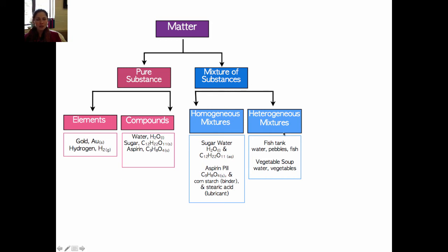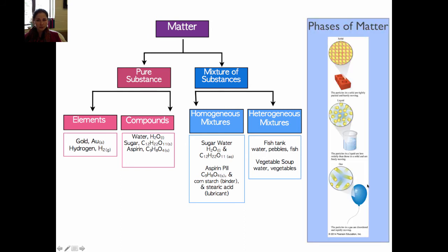Examples of heterogeneous mixtures include a fish tank, which contains water, pebbles, and fish — the water is a liquid and the pebbles and fish are solids, so we have two different phases. Vegetable soup is another example: you have the broth, which is liquid, and the vegetables, which are solid. One of the main features of a heterogeneous mixture is that you have two different phases, such as a solid mixed with a liquid, or a liquid mixed with a gas.